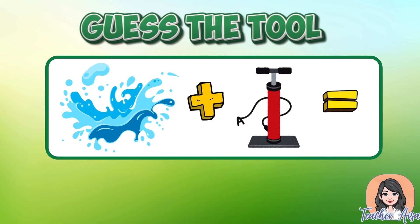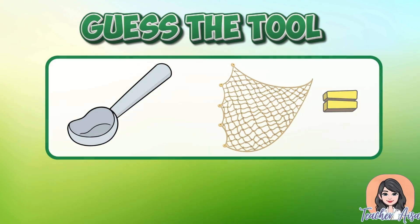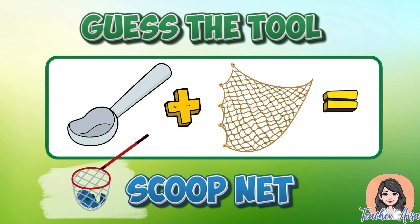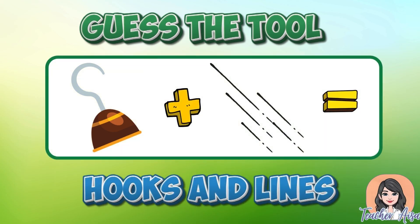Now let's have a short activity. Can you name the word being described by the picture clues? Correct, it is a water pump. Can you guess this one? Good job, it's a scoop net. How about this? Very good, it's hook and lines.